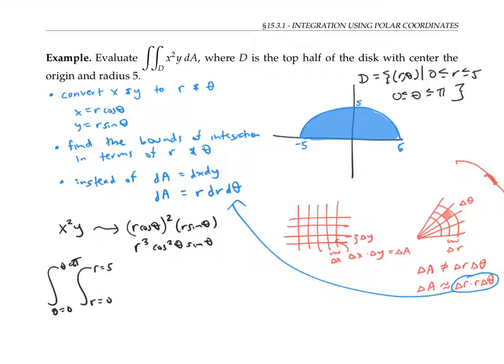I'll copy down the function that I'm integrating. So that's r cubed cosine squared theta sine theta. And then we need to include the area element, which is always r dr d theta for polar coordinates. This integral simplifies to the integral of r to the fourth, cosine squared theta, sine theta, dr d theta.